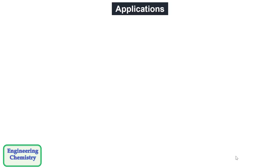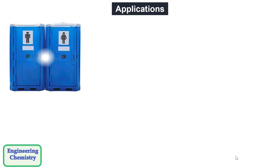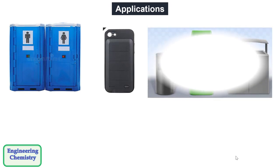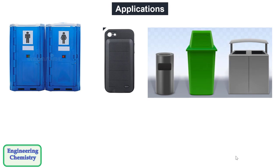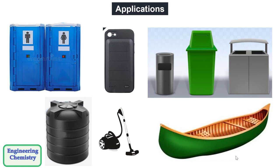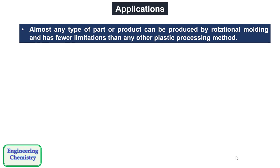Let's move to the applications. Rotational molding can be used for making portable toilets, battery cases, garbage containers, water tanks, vacuum cleaners and even canoes. Almost any type of part or product can be produced by rotational molding and has fewer limitations than any other plastic processing method.